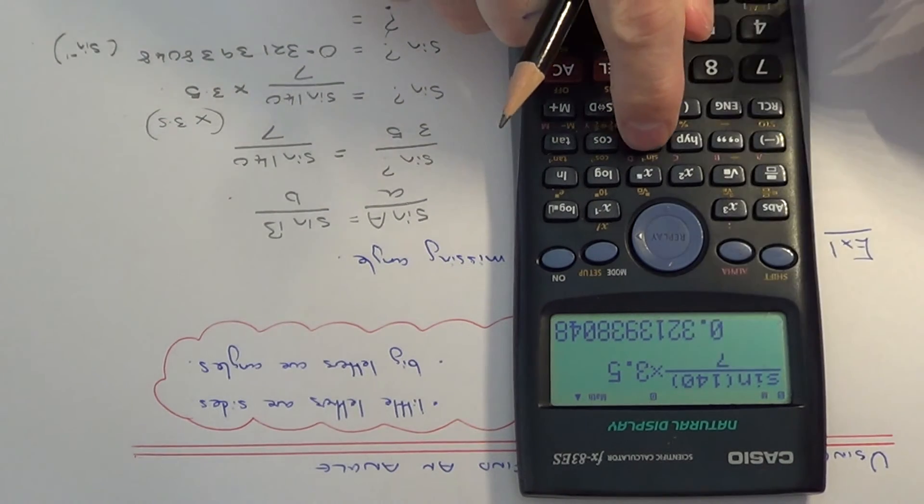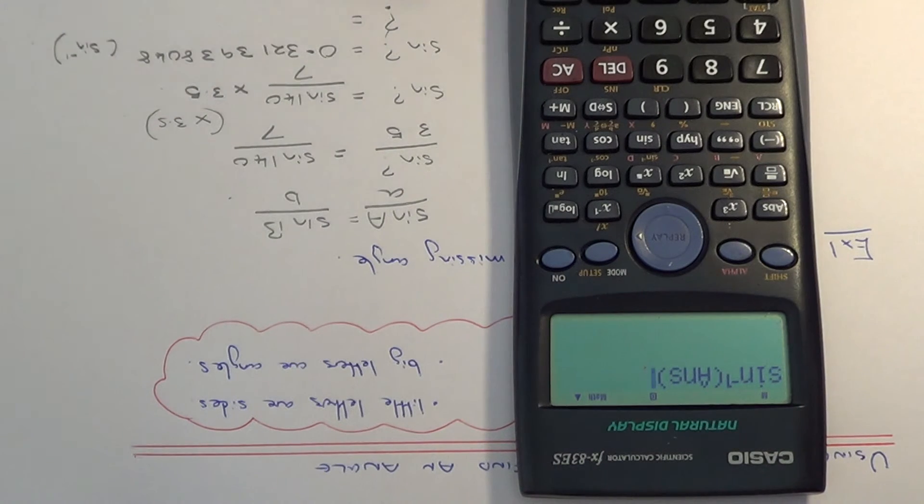I've got shift sin and s because it's stored in memory, and we get an angle of 18.7 degrees to 3 sig figs.